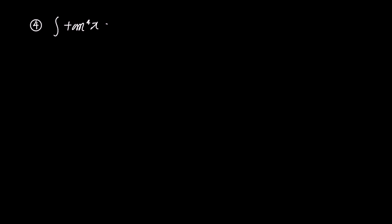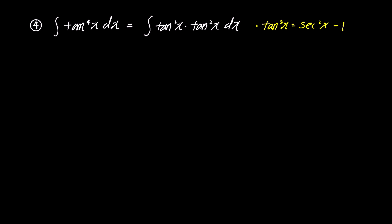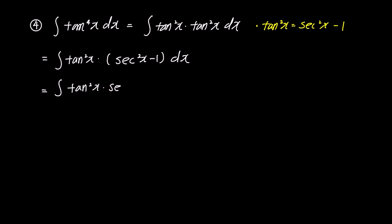Now let's tackle the last problem: the integral of tan⁴x. Expressing tan⁴x as the product of two tan²x terms, we get the integral of tan²x times tan²x dx. Using the identity tan²x = sec²x - 1 and substituting for the second tan²x, the integral becomes the integral of tan²x times (sec²x - 1) dx. Expanding the brackets, we have the integral of tan²x · sec²x dx minus the integral of tan²x dx.